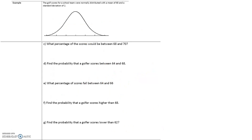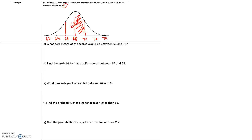What percentage of scores would be between 68 and 70? If one standard deviation gives us 68% of values, then the region from 68 to 70 — just the right half — is half of 68%, which equals 34% or 0.34.